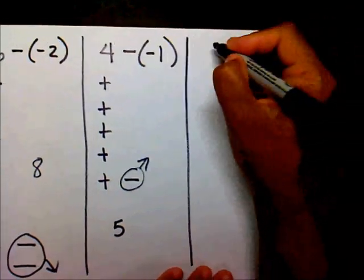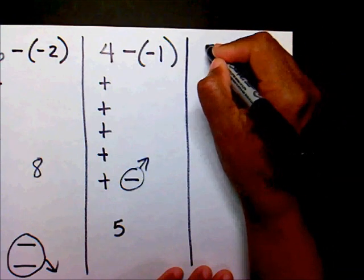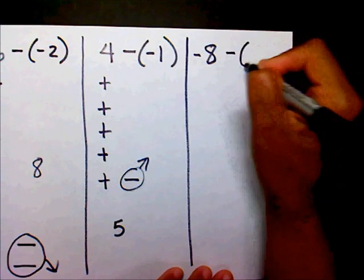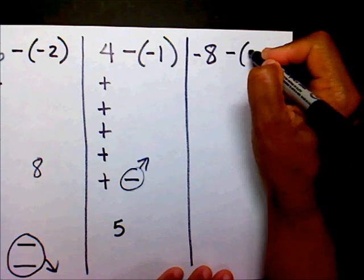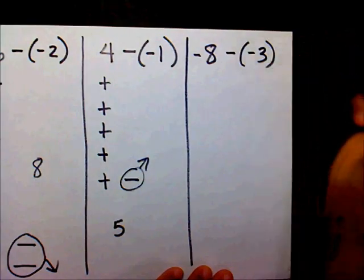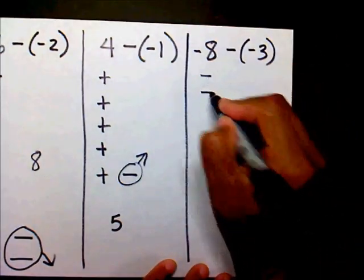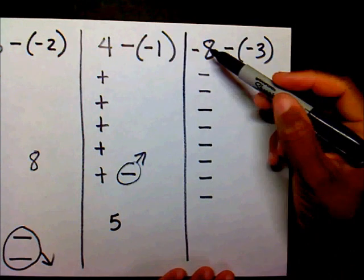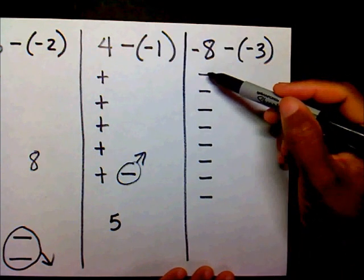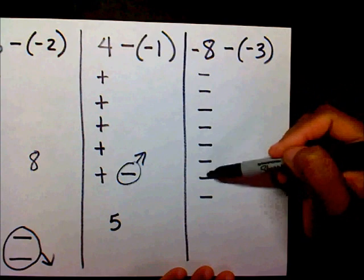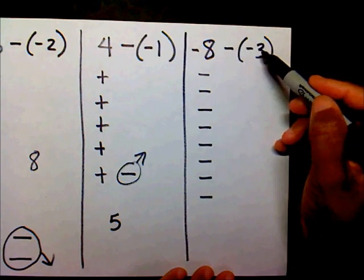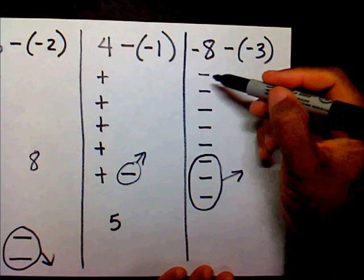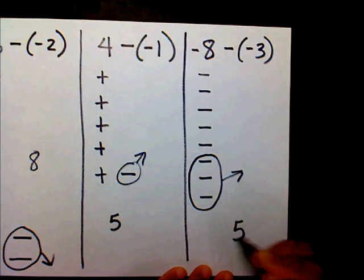You try one on your own now. Negative eight minus negative three. I have eight negatives and I want to subtract three negatives. Can I subtract three negatives? Yes. What is my final answer? Five negatives.